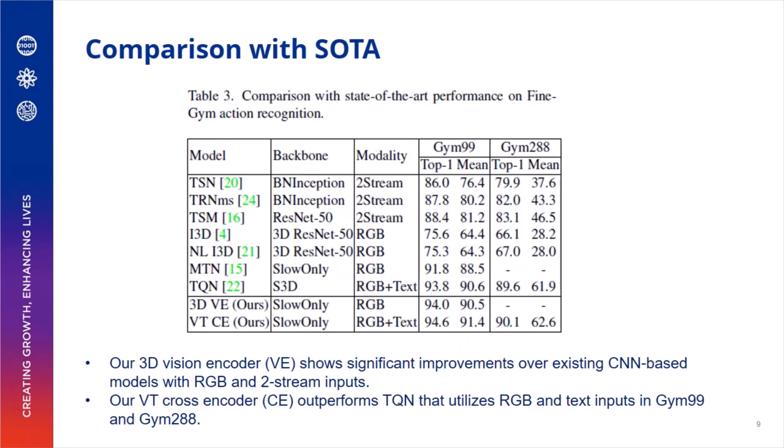This table shows the comparison with existing state-of-the-art performance. Our 3D Vision Encoder shows significant improvements over existing CNN-based models with RGB and two-stream inputs, while our Video Text Cross-Encoder outperforms state-of-the-art TQN that utilizes RGB and text inputs in GIM-99 and GIM-288.